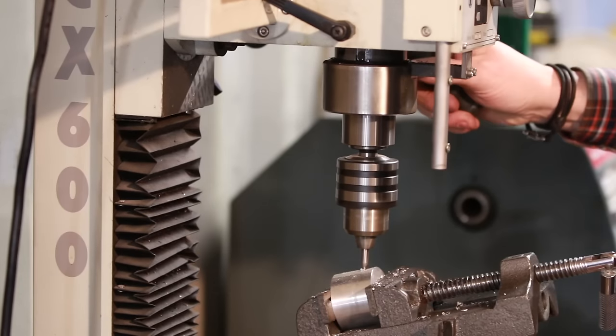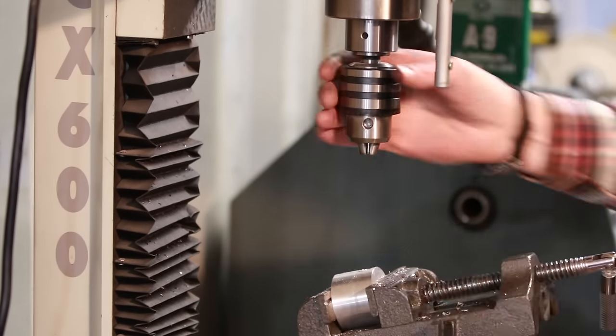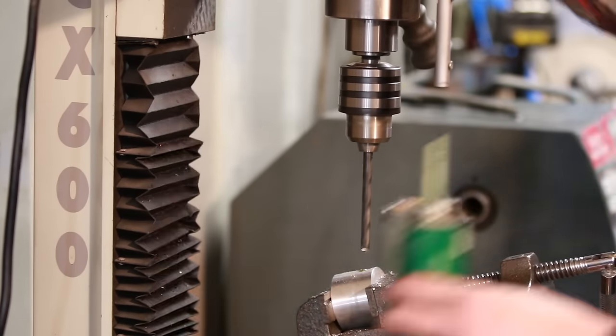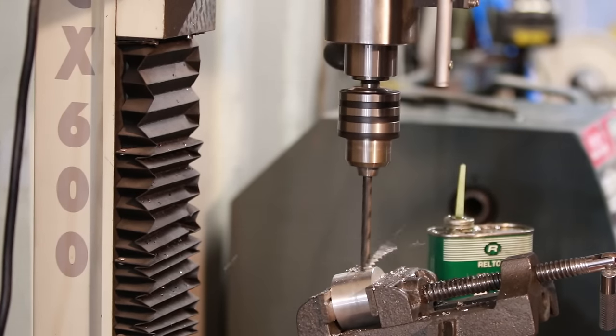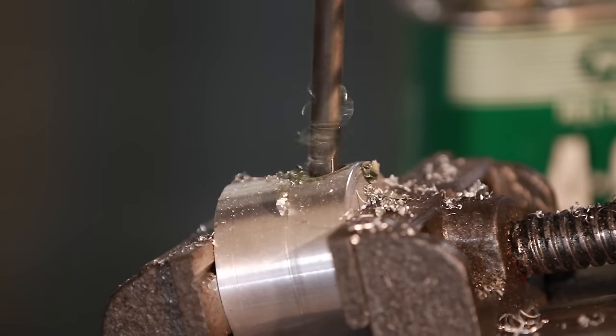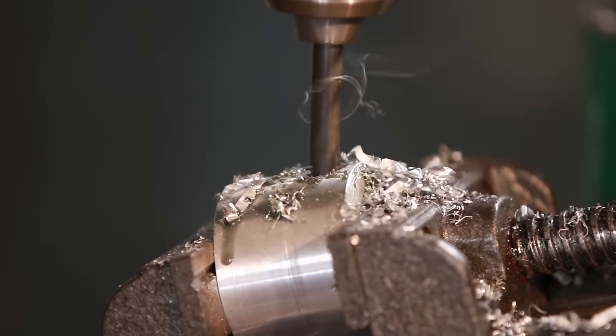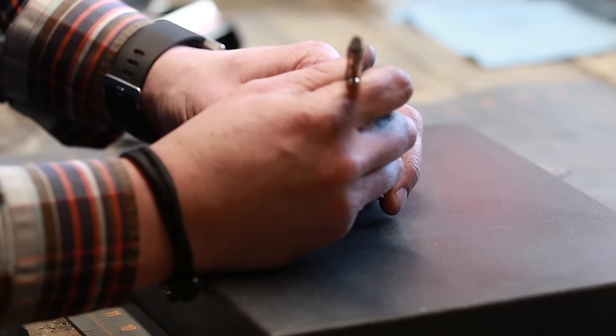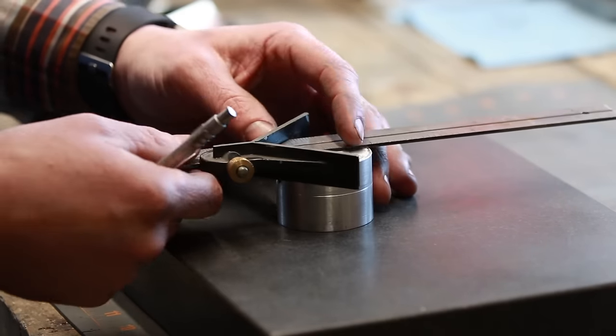Then I counterbore that surface there before, just so it was a nice flat surface when we go to use our center drill and then drill through it all the way. This is a size P drill bit, and making sure too that the drill bit had clearance underneath the stock and that it wasn't going to run into my vise.